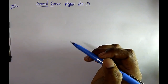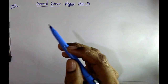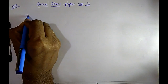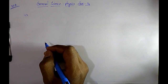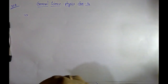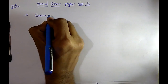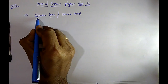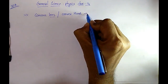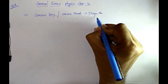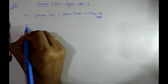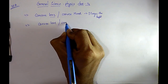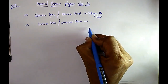Some students are asking doubts on which lens or mirror converges or diverges light. Here are two important points. First, concave lens or convex mirror diverges the light. Second, convex lens or concave mirror converges the light.